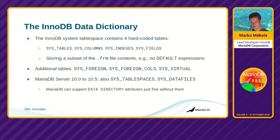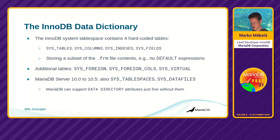In InnoDB there are four hard-coded tables in the system tablespace: SYS_TABLES, which contains table names and some other data; SYS_COLUMNS, which contains information about all columns in the table, one row per column; SYS_INDEXES, which contains information about the indexes on the table; and SYS_FIELDS, which contains the key columns of each index. This is a subset of what is stored in the .frm files — for example, we don't store the default value expressions for columns inside InnoDB.